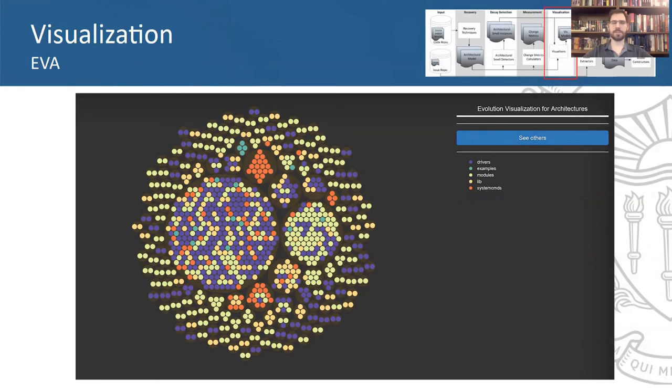The first, Single Version Architecture, shows a snapshot of the system at a single point in time. As you can see, the larger circles represent clusters, and the smaller circles represent implementation entities, which are color-coded according to the modules which they are from, such as namespaces in C and C++, and packages in Java.